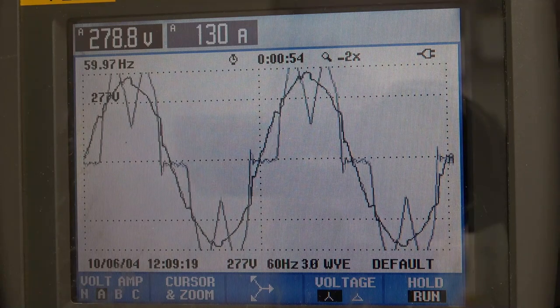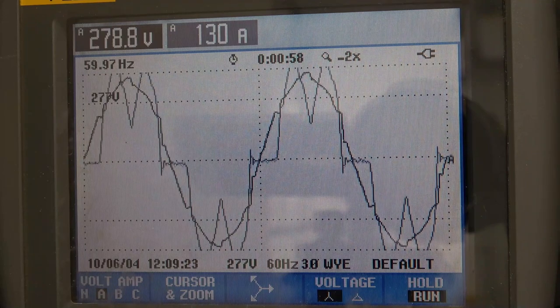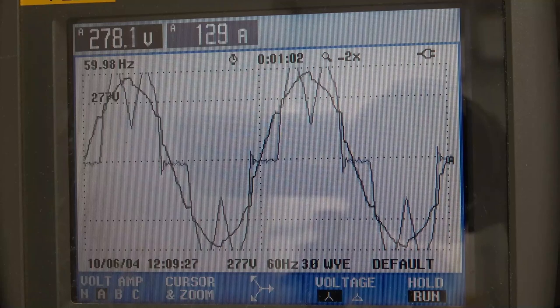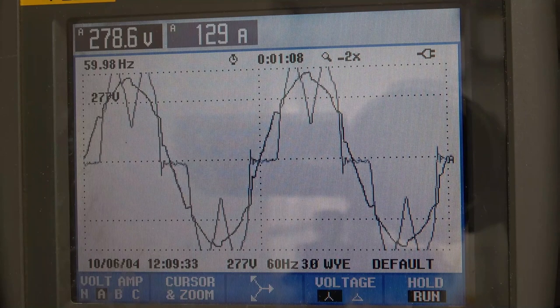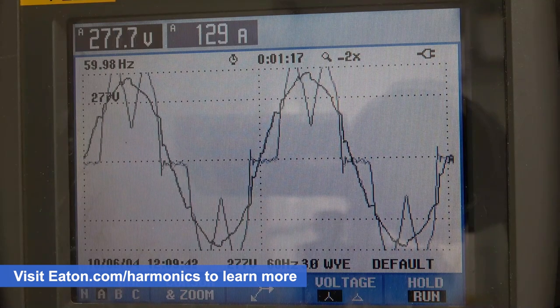Linear load is going to be clean sine wave voltage. Current that's drawn, like from a regular cross-line motor or a light or something like that, is going to look like the voltage. Maybe a little bit leading, maybe a little bit lagging, maybe in phase, depending on the power factor of the load. Non-linear load, the current doesn't look like the voltage. And the more current distortion I add, the more voltage distortion I get.